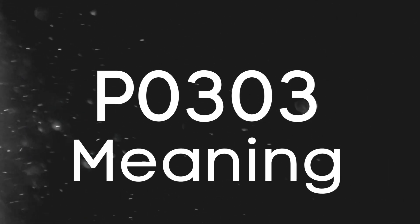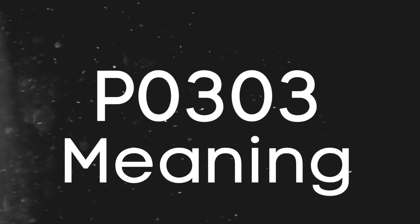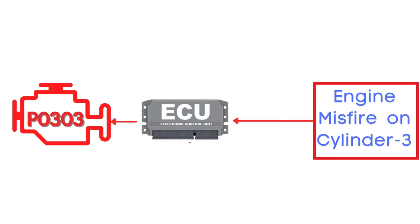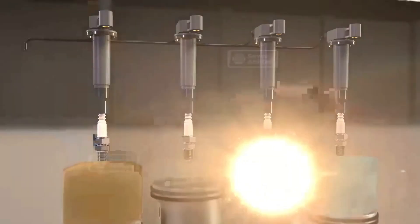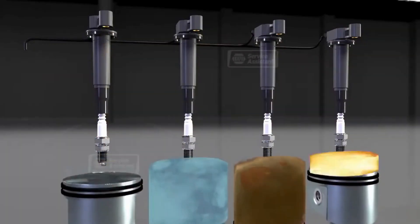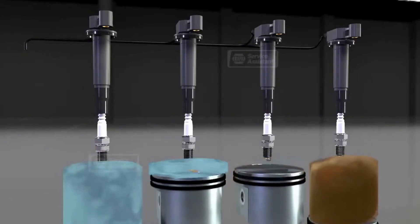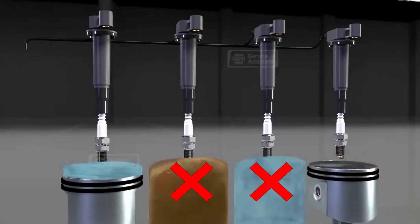First things first, let's break down what the P0303 code actually is. This code gets triggered when the Engine Control Module, or ECM, detects an engine misfire on Cylinder 3. A misfire means that the combustion process inside one or more cylinders isn't happening properly.